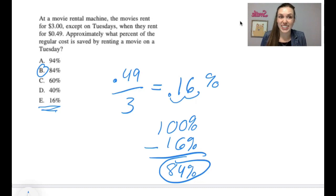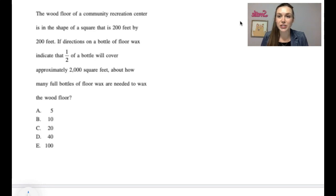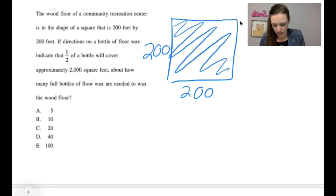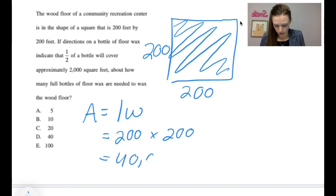Really make sure that when you're answering questions, that you look closely, very closely at what they're asking for. The wood floor of a community recreation center is in the shape of a square that is 200 feet by 200 feet. So we're at a square. If the directions on a bottle of floor wax indicate that half the bottle will cover approximately 2,000 square feet, how many full bottles of floor wax are needed to wax the floor? So what we need to do is find this area, and to find area, area is simply length times width. So our area equals 200 times 200. 200 times 200 is 40,000.